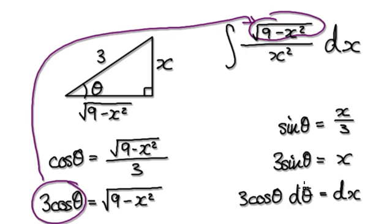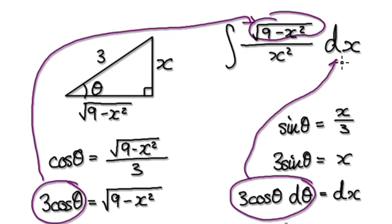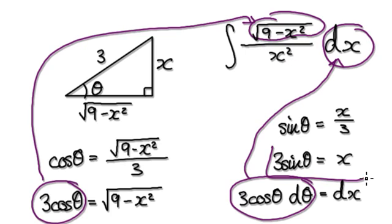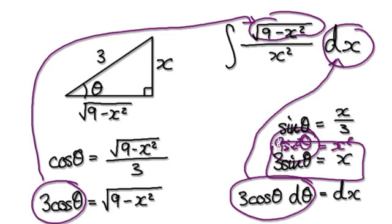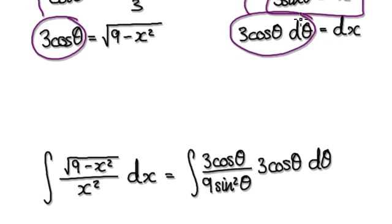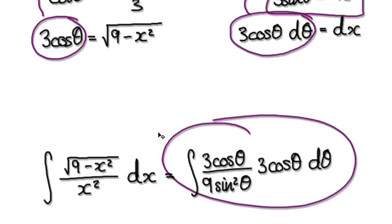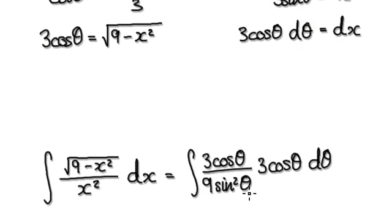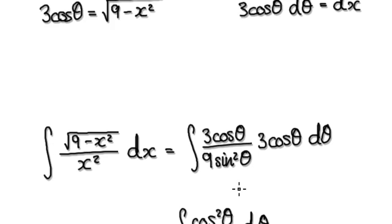We can put the dx into the integral. Looking at x squared — going back to the triangle, if the opposite is x, then x² = 9sin²θ. So you can substitute this into x². This whole thing will then become the new expression. Tidy it up and it gives you this.